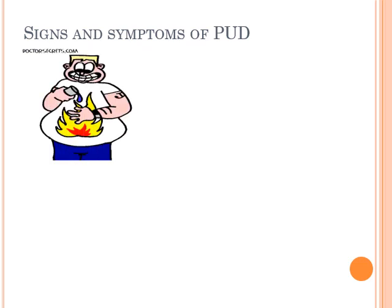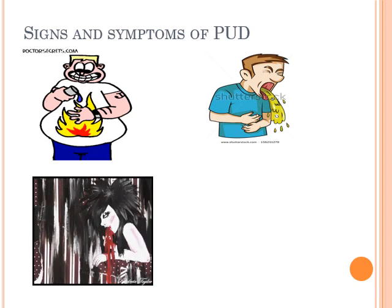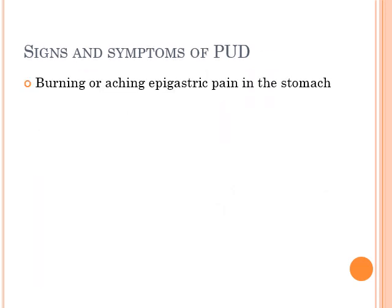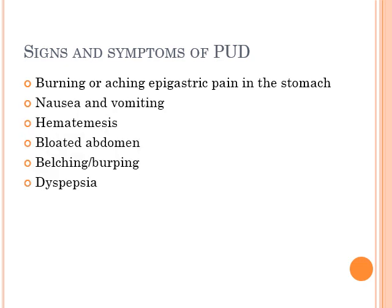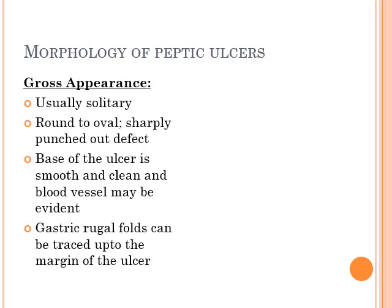The signs and symptoms of peptic ulcer disease include most commonly a burning sensation in the epigastrium — in Bengali patients they describe it as 'pit chala' — followed by vomiting, blood in the vomitus (hematemesis), and a bloated abdomen. The most common symptoms are burning or gnawing epigastric pain, nausea, vomiting, hematemesis, bloating, belching, burping, and dyspepsia.